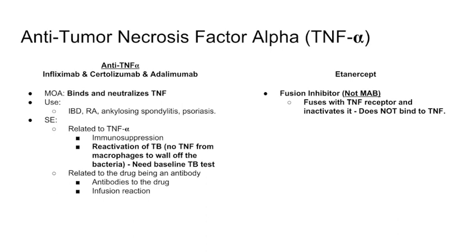Because these are immunologic agents — antibodies — you can have infusion reactions to the drug. Lastly, etanercept is another TNF blocker but it's a fusion inhibitor, not a monoclonal antibody. It's a TNF-alpha receptor on a decoy agent. When given, it binds TNF-alpha and precipitates it out of the blood, rather than binding like a traditional monoclonal antibody.